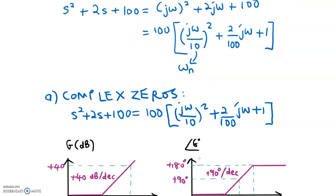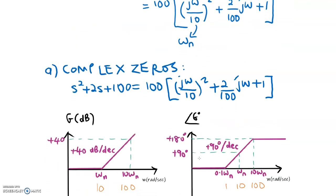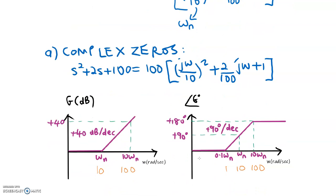For example A — complex zeros — if we have this function at the numerator, we have complex zeros. We rearrange until we get this format with plus 1 at the end, so the cutoff frequency is 10.